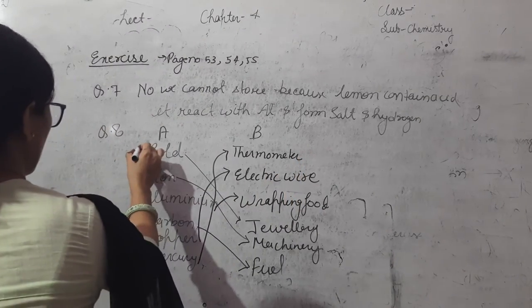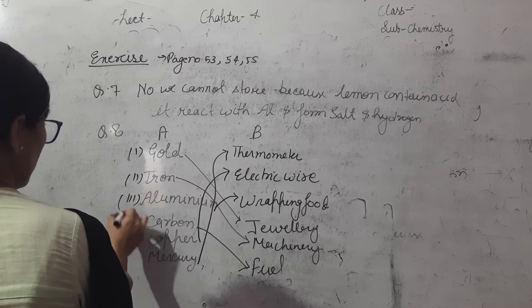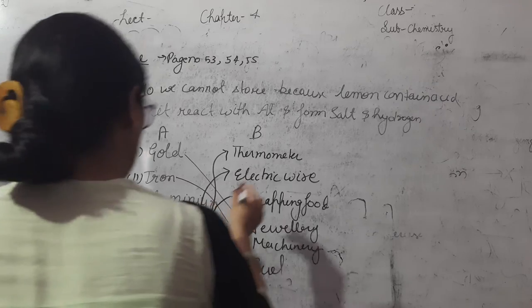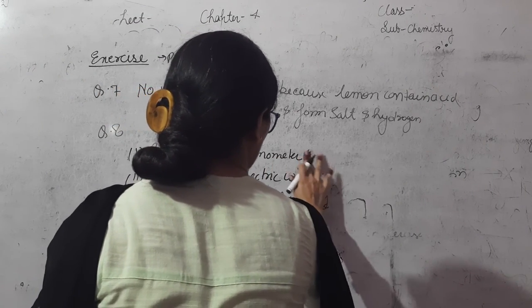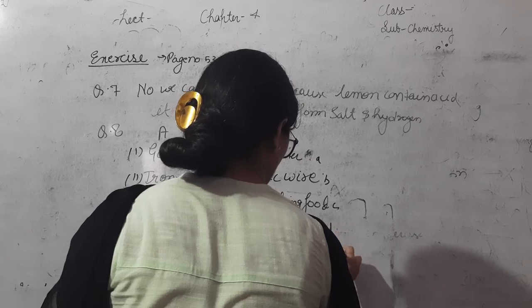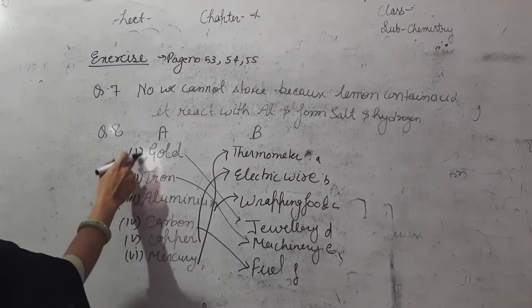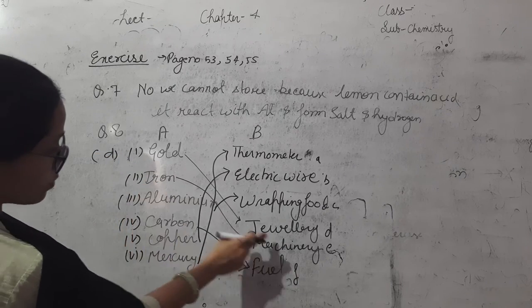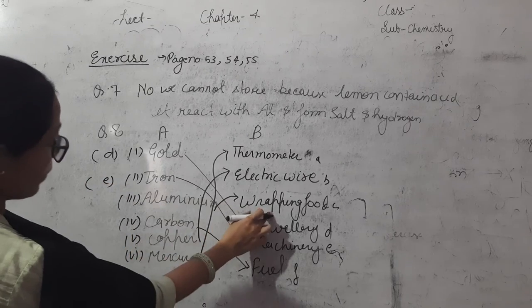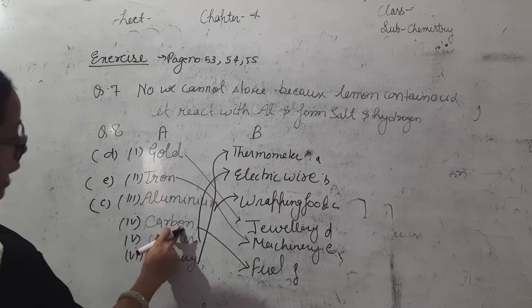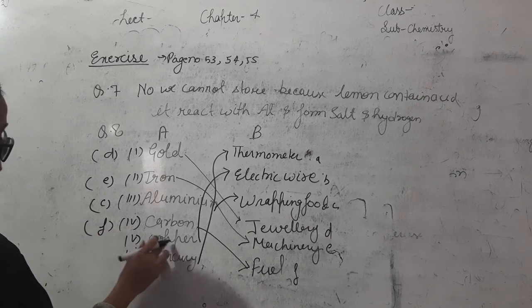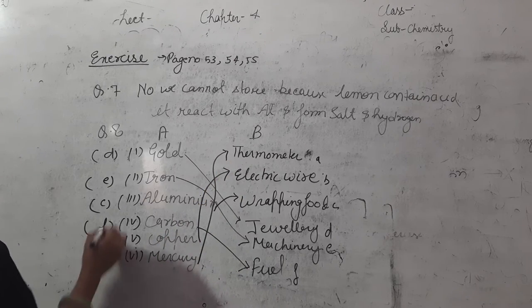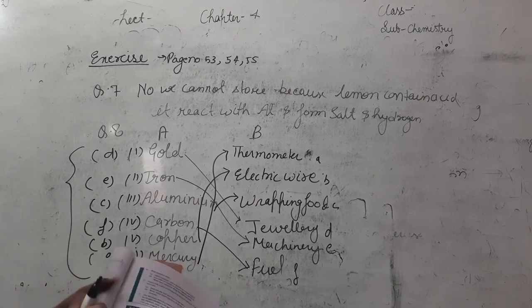The first answer is gold to jewelry, answer is D. Iron is machinery, means E. Aluminum is used for wrapping food, means C. Carbon is used as fuel, means F. Copper is used for electric wire, means B. And mercury is used in thermometer, means A. This is the answer.